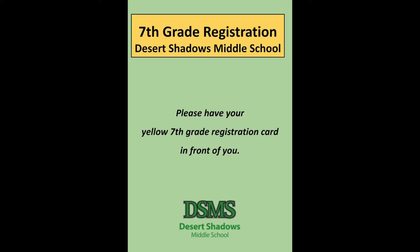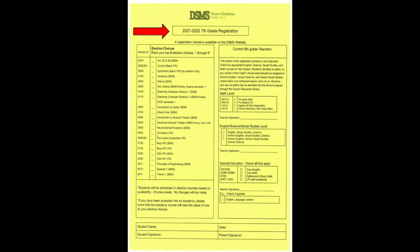Please have your yellow registration materials in front of you as we explain the steps for filling out your registration card. Let's take a look at the 7th grade registration card for the 21-22 school year. Notice at the top of the card it says a registration tutorial is available on the DSMS website. If you forget anything, you and your parents or guardian can access this video at any time on the DSMS website.